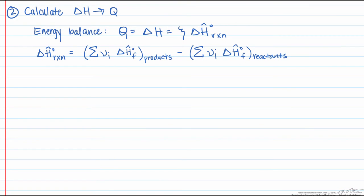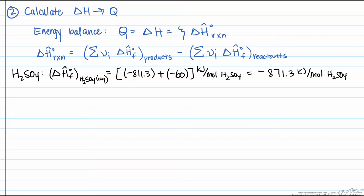Now let's solve for the heats of formation for all of our reactants and products. We'll start with H2SO4 aqueous. That equals its heat of formation plus its heat of solution. So our heat of formation for aqueous H2SO4 is minus 871 kilojoules per mole of H2SO4.